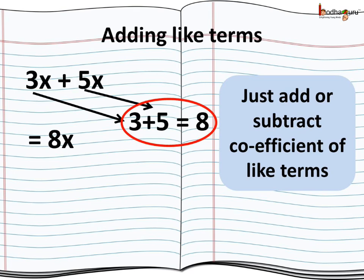We just add the coefficients and the algebraic factors remain the same. For example, we are adding 3x plus 5x. Here 3 plus 5 equal to 8 and the algebraic factor remains the same. So 3x plus 5x is equal to 8x.